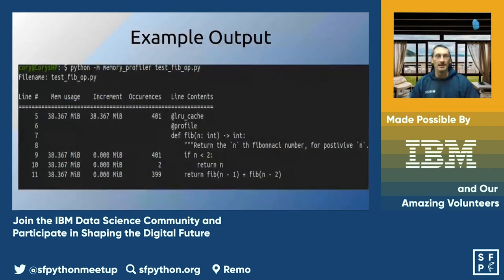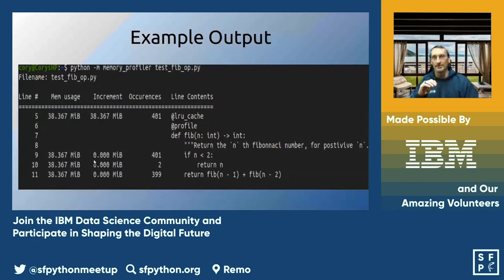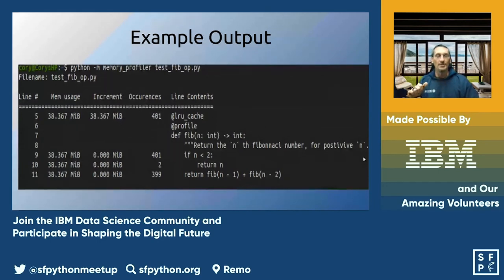This is what you would get if you run it in your terminal. You run it as a module — `python -m memory_profiler` — followed by the name of your file. You'll get your initial memory usage, then it'll show what it incremented from and the occurrences it's counting. It keeps stepping through your entire function showing your progression in memory consumption, and the longer the function, the more detail you get.